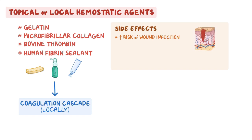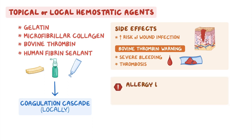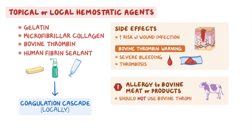The main side effects of topical hemostatic agents are an increased risk of wound infection and impaired wound healing. Bovine thrombin has a boxed warning for severe bleeding and thrombosis, which may result from the development of antibodies. Clients with an allergy to bovine meat or products should not use bovine thrombin, as it may cause anaphylaxis.